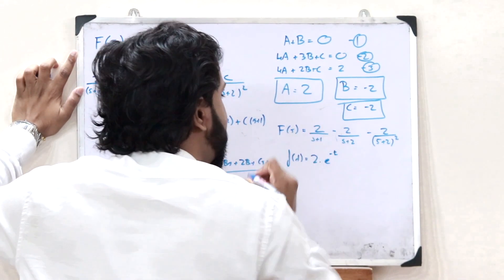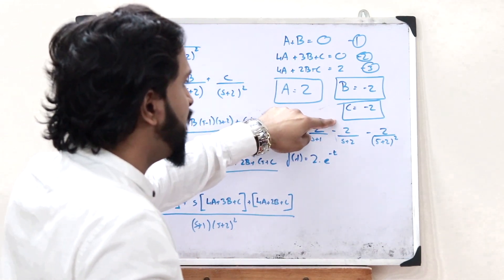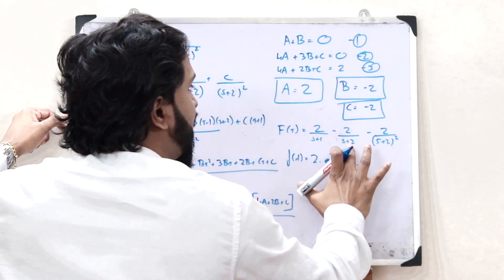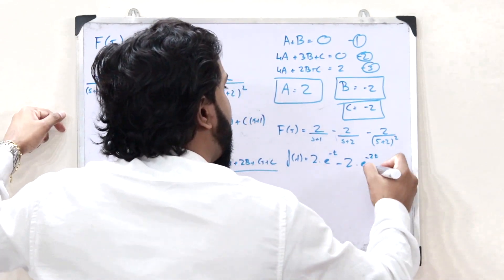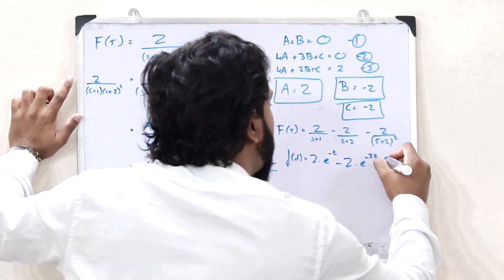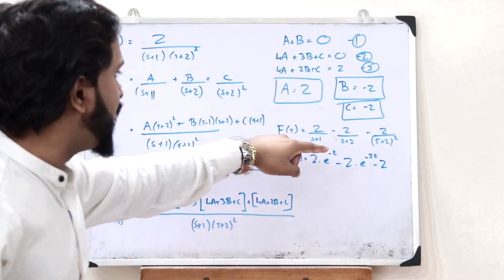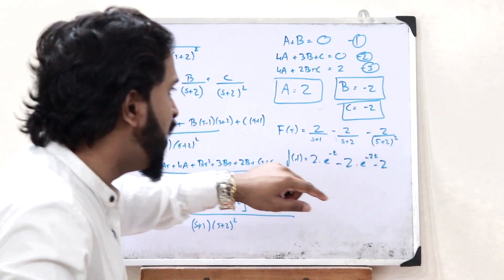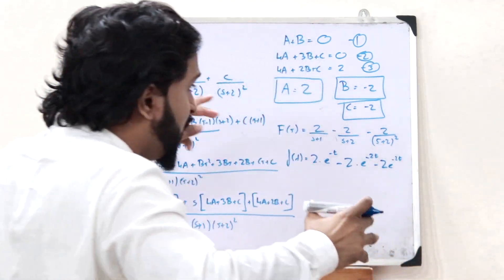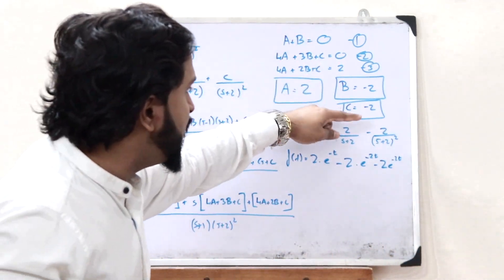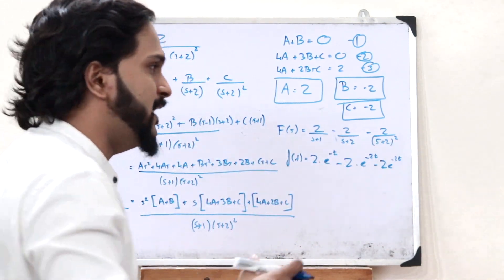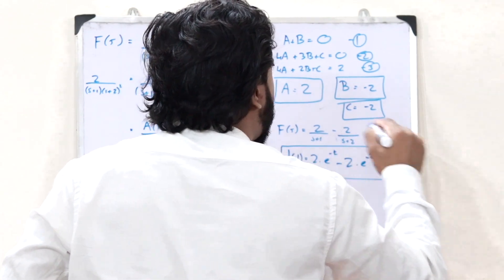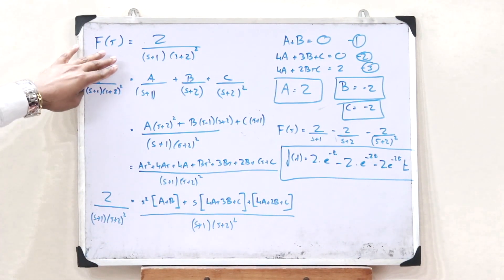Similarly, the second term gives −2e^(−2t). For the third term, −2/(s+2)², we use the fact that the inverse Laplace of 1/(s+a)² is t·e^(−at). The inverse Laplace of 1/s² is t, so here we get −2t·e^(−2t).